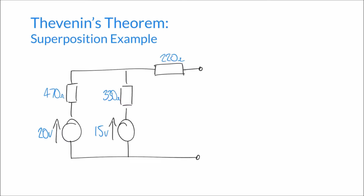The intention is exactly the same as our other examples: we want to simplify this circuit down to a Thevenin equivalent circuit, which consists of just one voltage and one resistance — the Thevenin voltage and Thevenin resistance. To do that, we're going to need to apply the superposition principle as an extra step in this particular video.